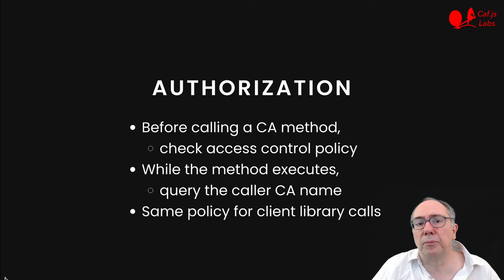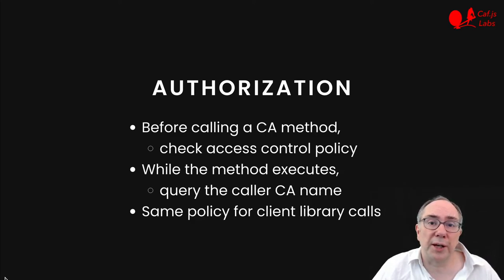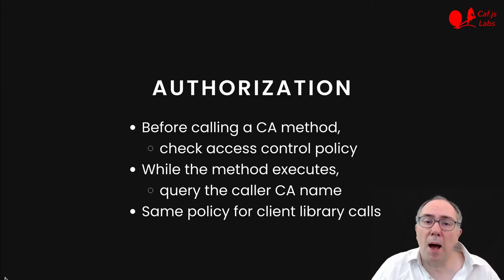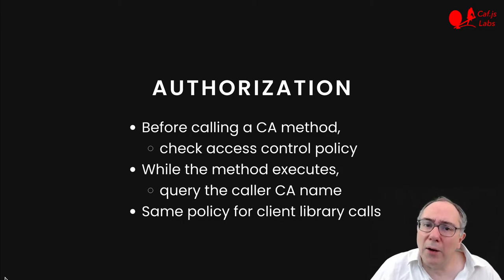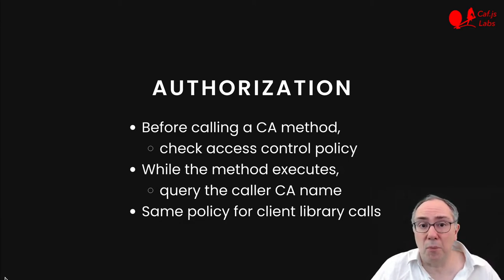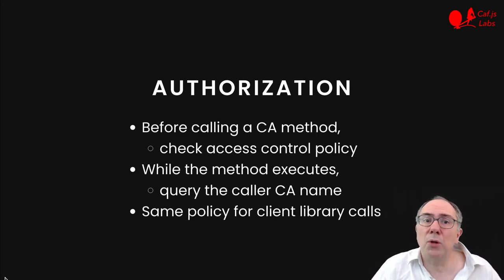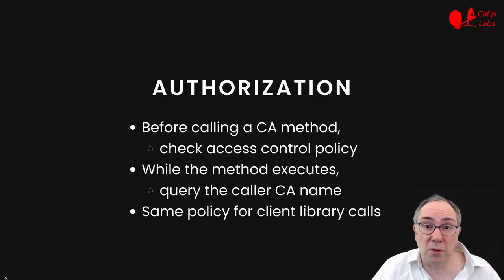Before calling a method of a cloud assistant, we always perform an access control check based on who is calling, what method we are trying to invoke, and what is the policy associated with the target CA. We also provide a complementary mechanism for authorization — whenever the method is executing, we can always query the system and ask who is calling me, and based on the reply, change our behavior. For consistency, regardless of whether the mechanism is the client library or the trusted bus, we always enforce the same policy.